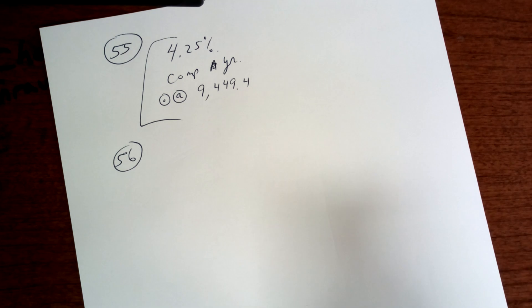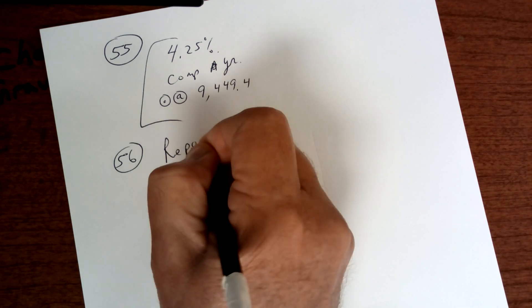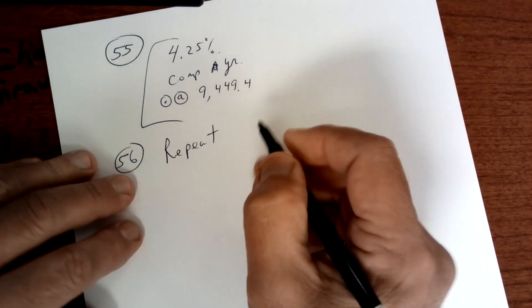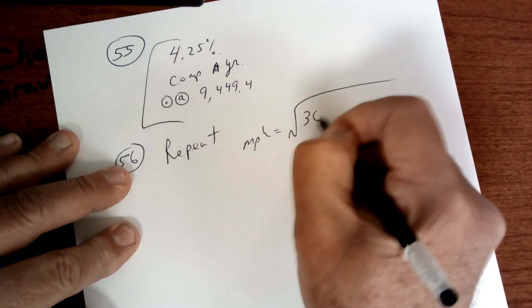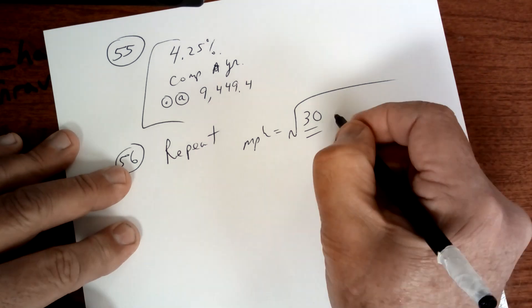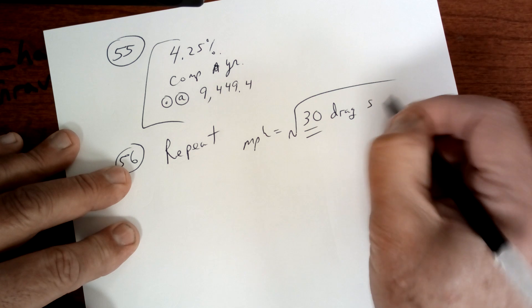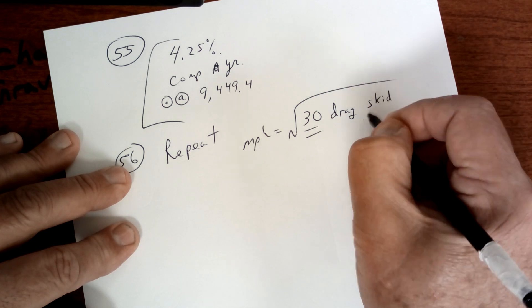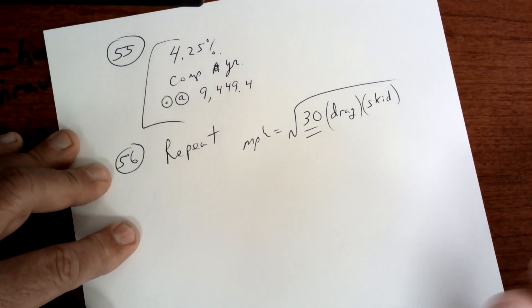This one is a repeat of the skid mark with the deer. So this is a repeat. Let's just go over the formula. It's miles per hour equals the square root of 30, which is the constant, times the drag factor, times the skid, or the average of the skid if there's a few of them. And they use different letters, but that's basically it.